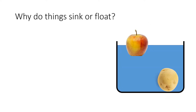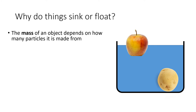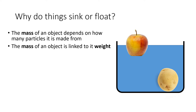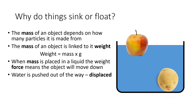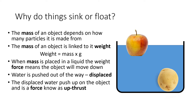So why do things sink or float? The first thing we need to understand is the concept of mass — mass is the number of particles that an object is made from. Mass times gravity, or gravitational field strength, gives you the weight of an object. Remember, weight is a force. When a mass is placed in a liquid, its weight force will start to move that object down into the liquid. Water is pushed out of the way to make room — we say the water has become displaced. Displaced water starts pushing back with a force on the bottom of the object, and that force is called upthrust.